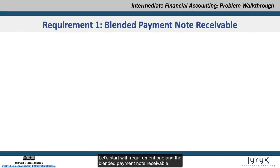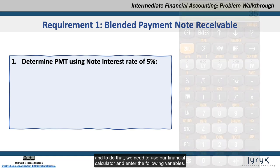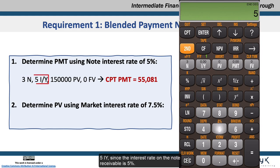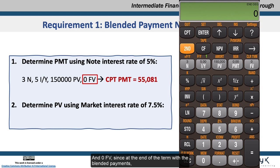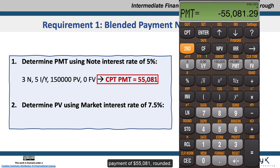Let's start with requirement 1 and the blended payment note receivable. The first thing we need to do is calculate the blended payment of the note, and to do that we need to use our financial calculator and enter the following variables: 3N, since the term of the note is 3 years; 5IY, since the interest rate on the note receivable is 5%; 150,000 PV, which represents the amount of the note to be paid over the period; and 0FV, since at the end of the term with the blended payments the final balance of the note should be 0. We compute the payment and we should end up with an annual blended payment of $55,081, rounded.